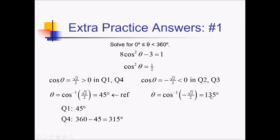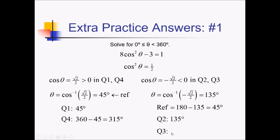135 is 45 degrees away from the x-axis, from the 180 line. So 45 degrees is our reference angle if you subtract that from 180. So now we need answers in quadrants 2 and 3. For quadrant 2, we actually already have that answer — it's 135. For quadrant 3, we need to go 45 degrees away from the x-axis in the quadrant 3 direction. Starting at 180 and adding 45 degrees to get into quadrant 3, that's going to give us 225 degrees.